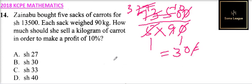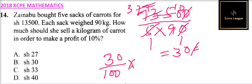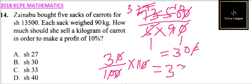To make a profit of 10%, it means you take 30, divide by 100, and multiply by 110. You can cancel that — it will be three multiplied by 11, which gives 33. So in order to make a profit of 10%, she will have to sell a kilogram at 33 shillings.